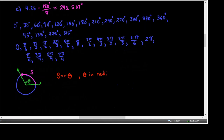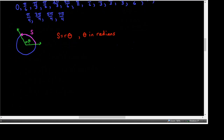This formula s = r theta only works if theta is in radians. If the problem gives you the angle in degrees, the first thing you must do is convert to radians. Almost every formula we have assumes theta is in radians — they generally won't work if theta is in degrees.